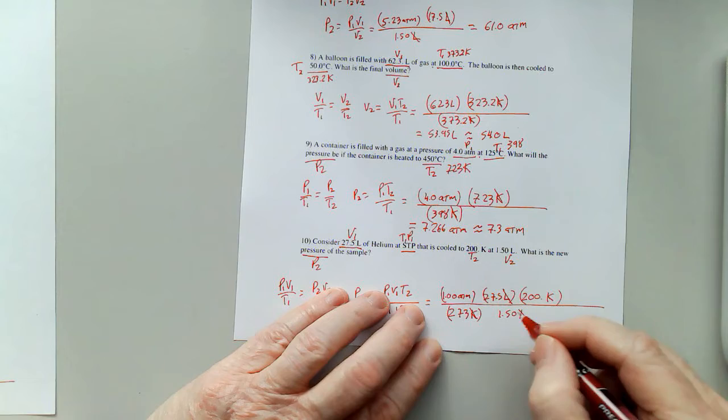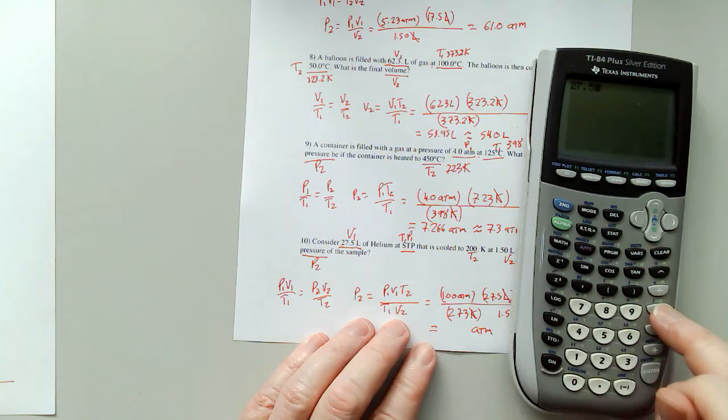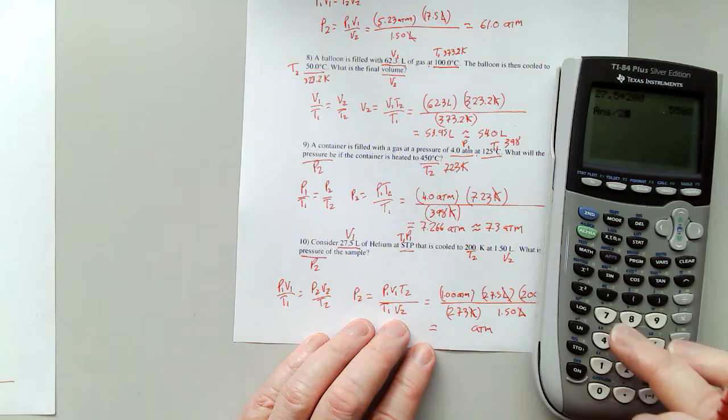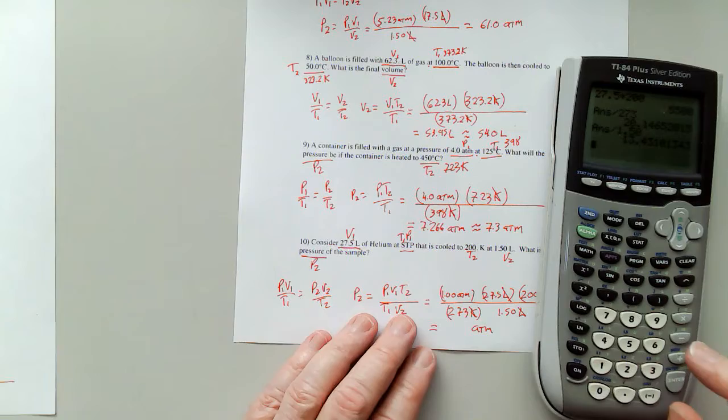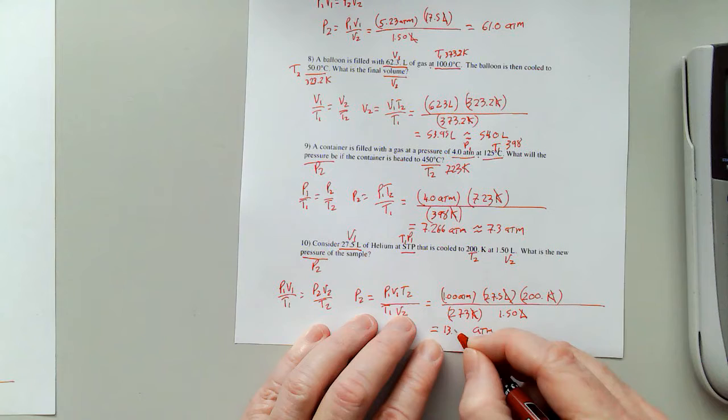Liters is going to cancel, Kelvin is going to cancel. I'm getting something in atmospheres, which is real good for a pressure. So 1 times 27.5 is 27.5 times 200, I'm going to divide that by 273, hit equals, divide that by 1.50, hit equals. I'm getting about 13.43, so I'm good for 3 sig figs. We're going to call that 13.4 atmospheres.